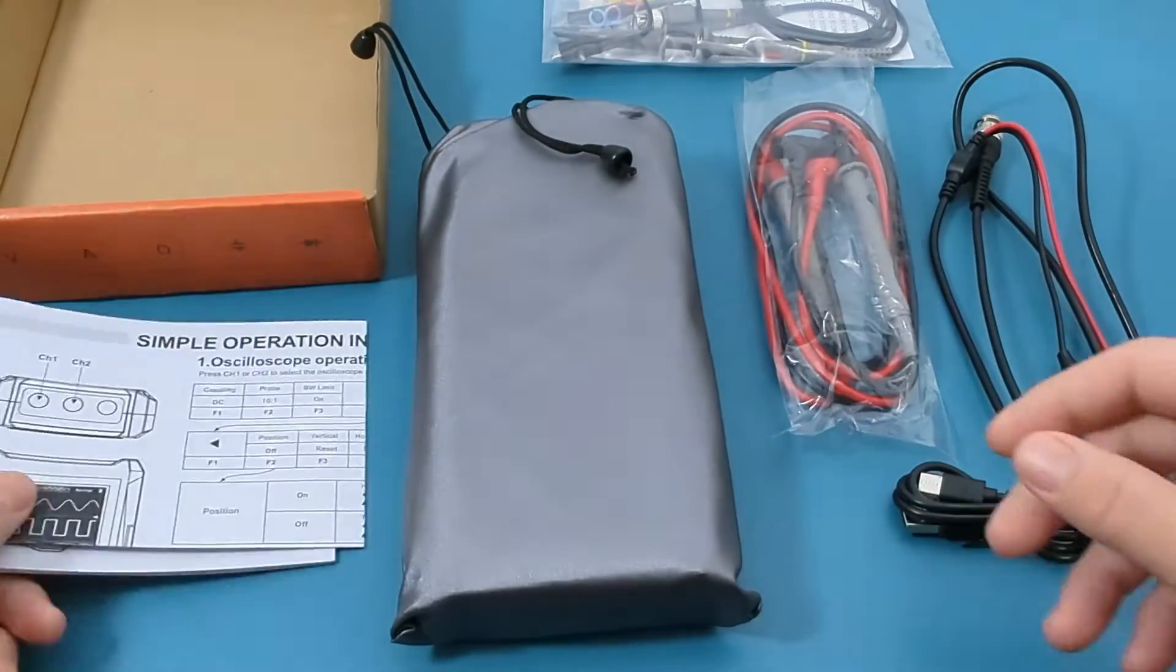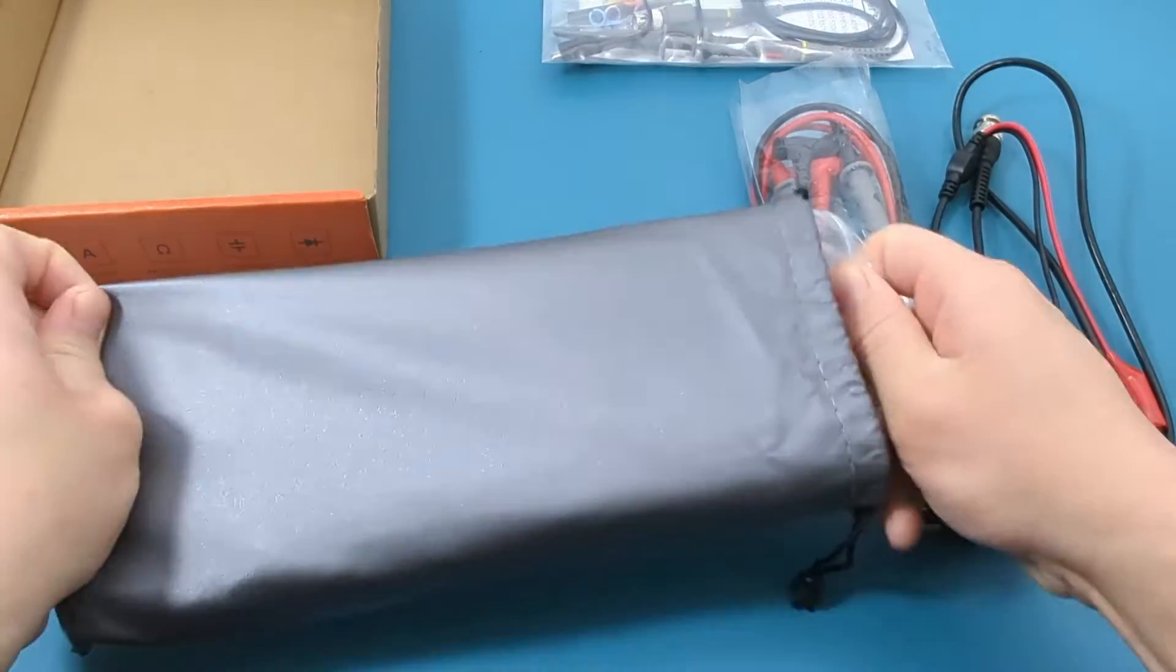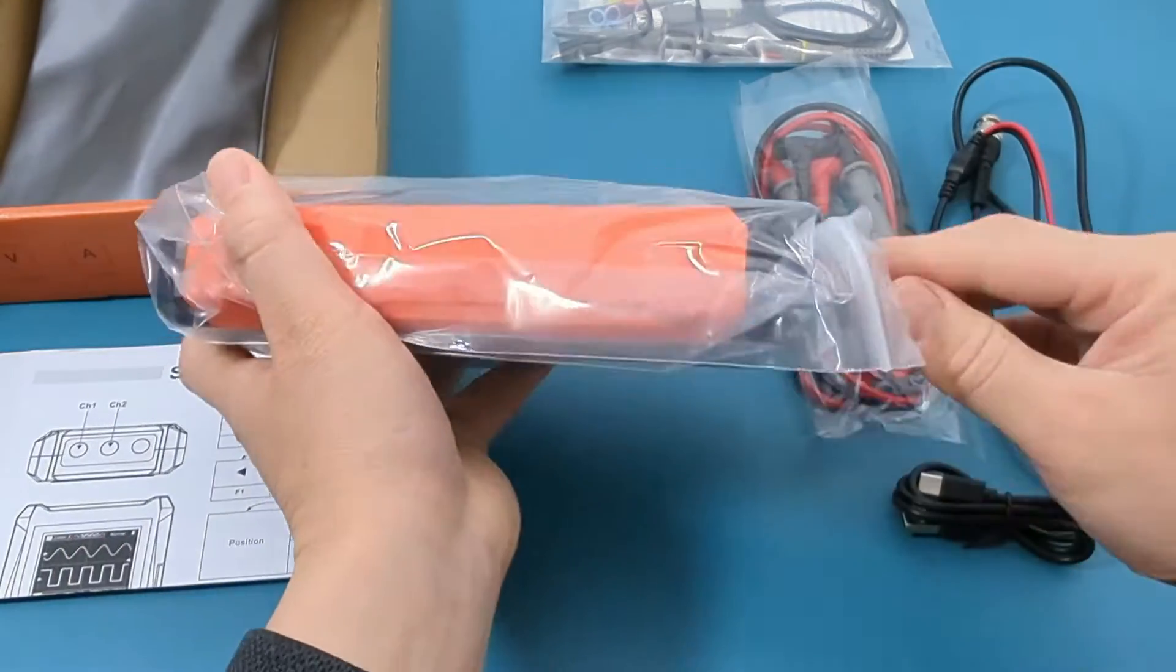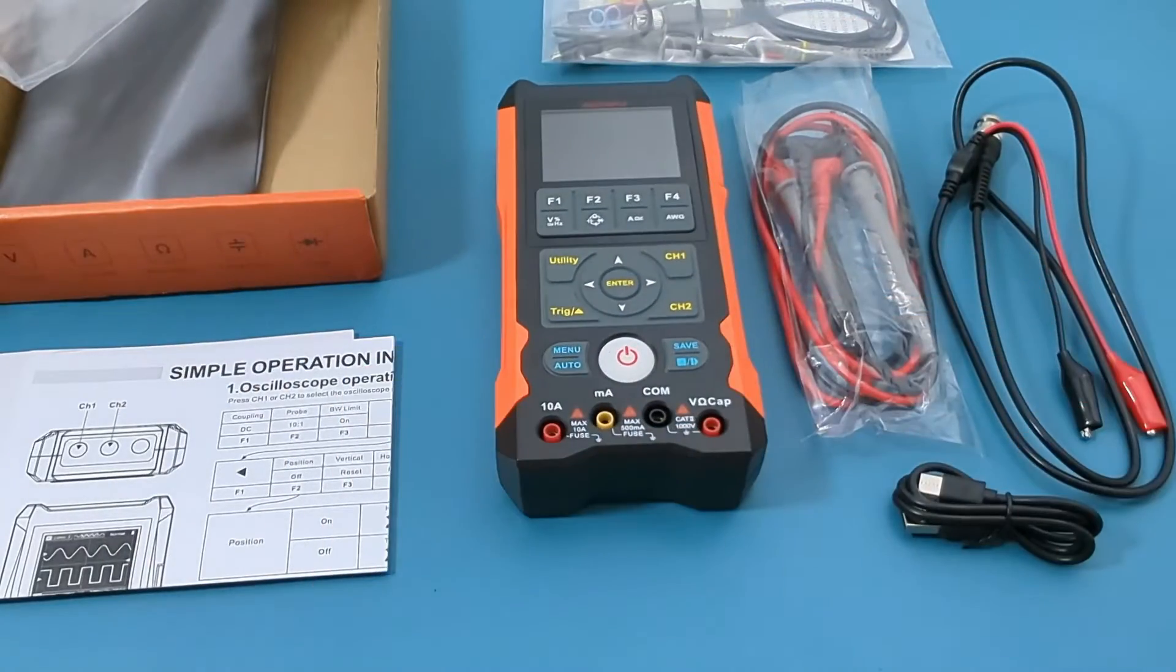Unlike other multimeters that use batteries, this one self-charges using a Type-C cable. On the back of the multimeter there is a kickstand which allows for easy viewing of the display.